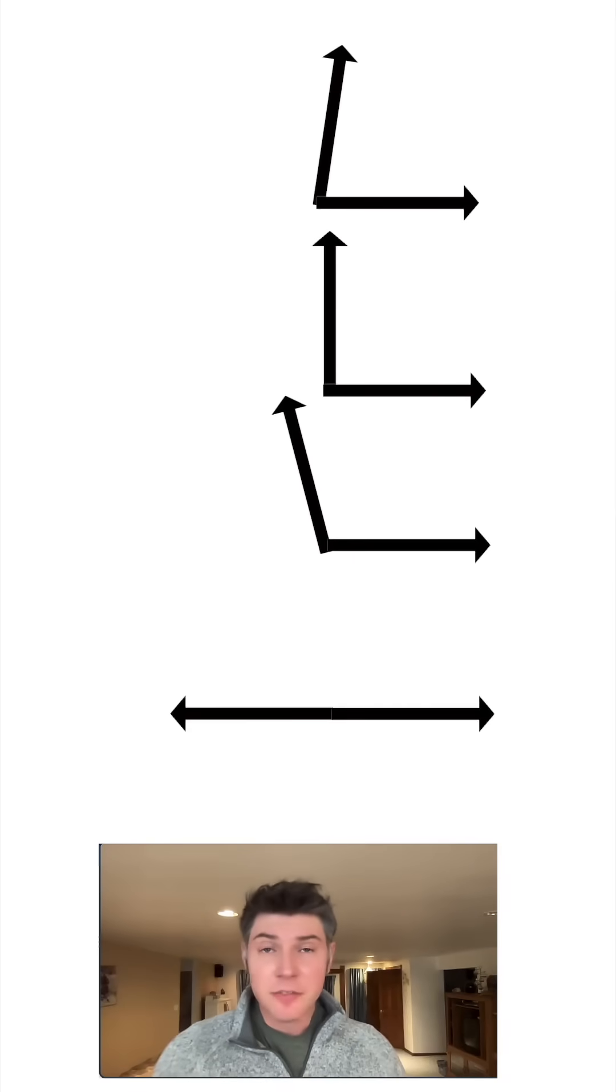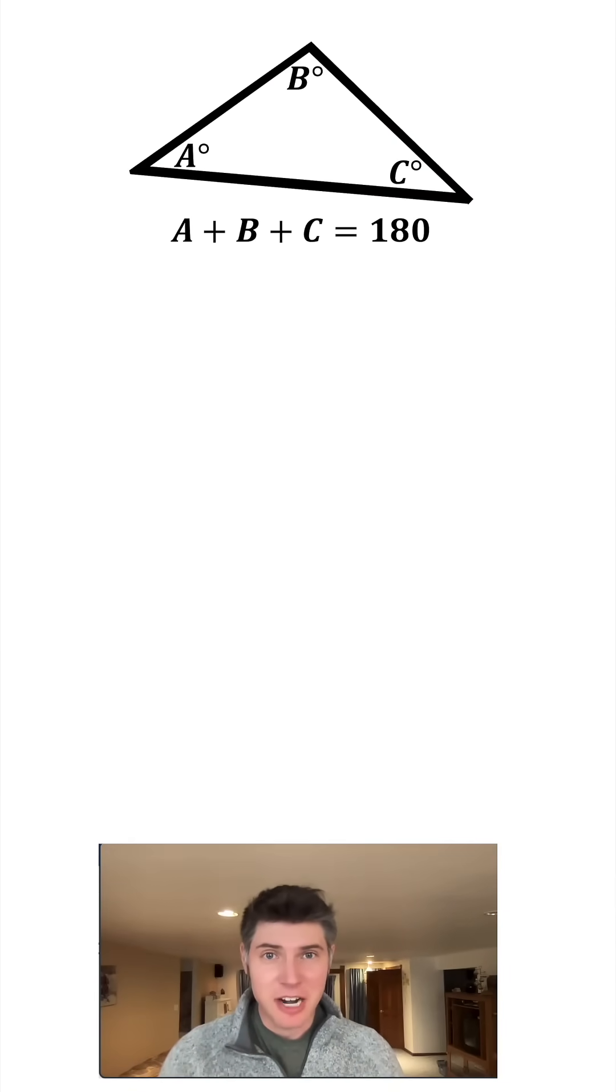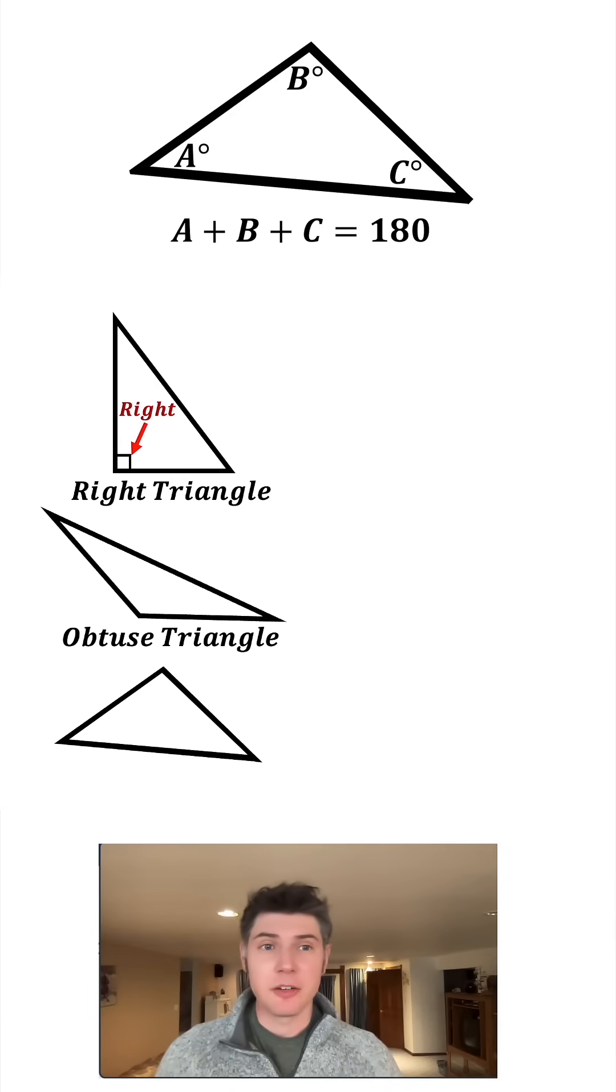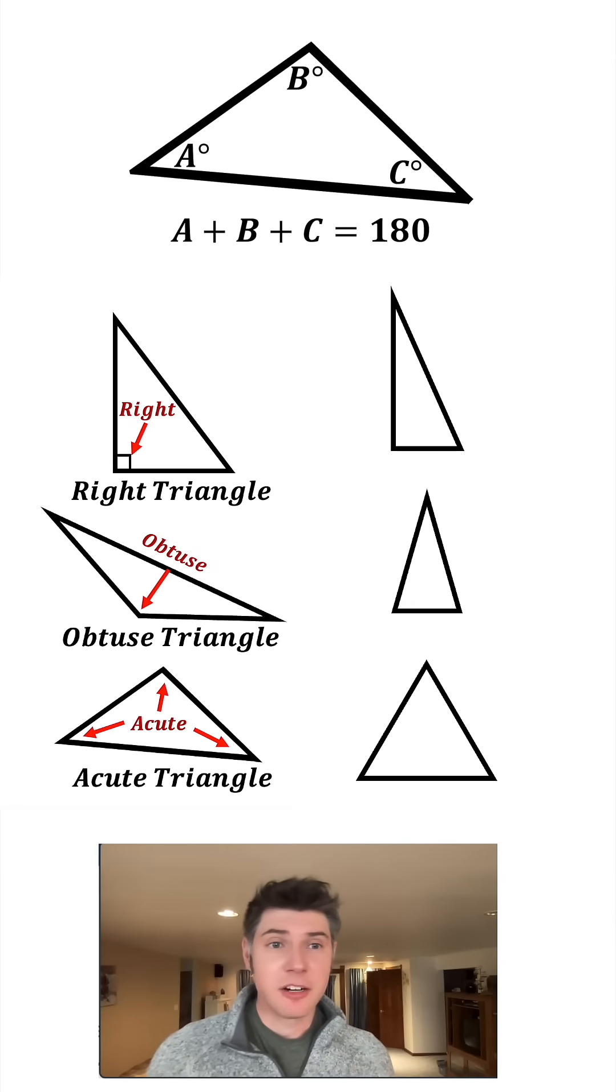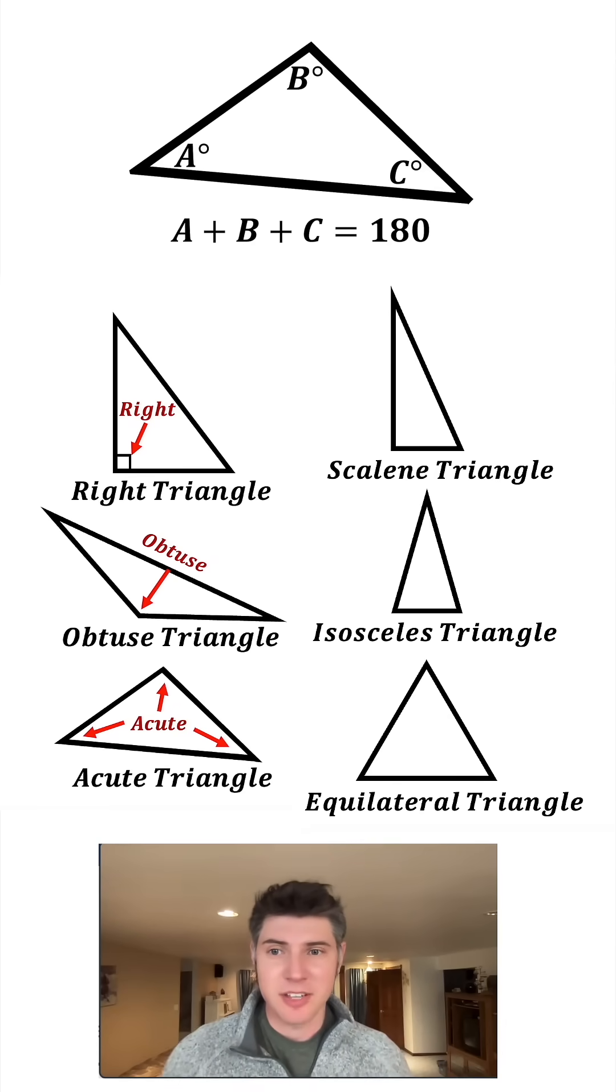Next we can start focusing on angles. An individual angle can be acute, right, obtuse, or straight. The sum of the interior angles of a triangle always sums to 180 degrees, and we can categorize triangles based on these angles: a right triangle if there's one right angle, an obtuse triangle if there's one obtuse angle, and an acute triangle if all three angles are acute. We can also categorize triangles based on the lengths of their sides: scalene if all the sides are different, isosceles if at least two sides are the same, and equilateral if all three are the same.